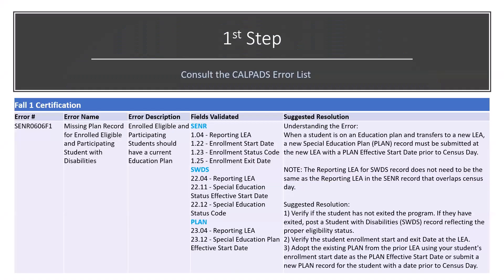As always, the first step when troubleshooting any error is to consult the CalPADS Error List. The Error List can be found in the CalPADS User Manual under Help, then Troubleshooting, or on the CalPADS System Documentation page in the CDE Web Portal.